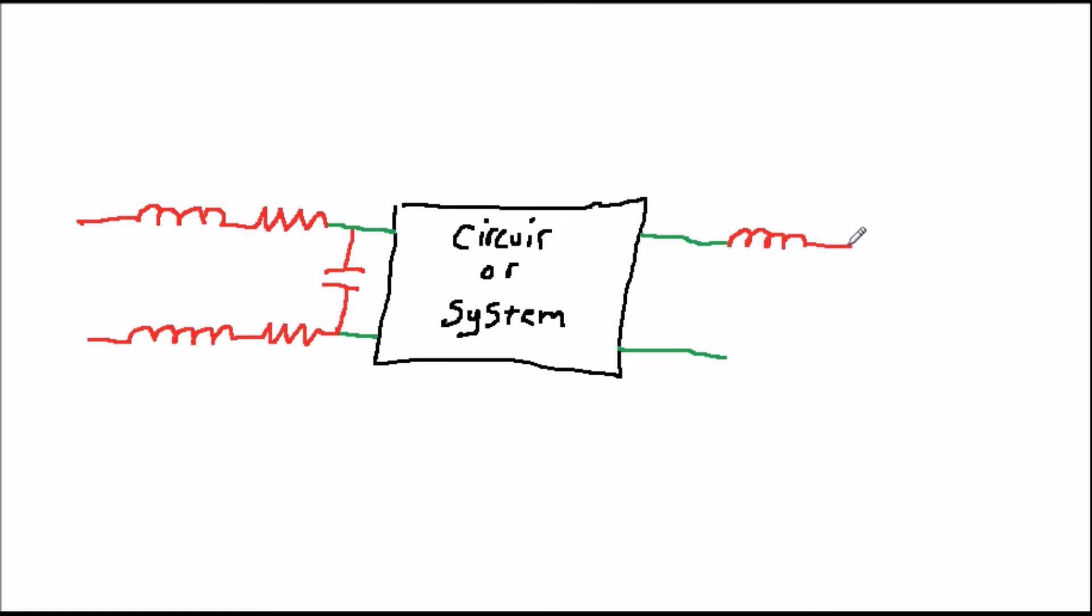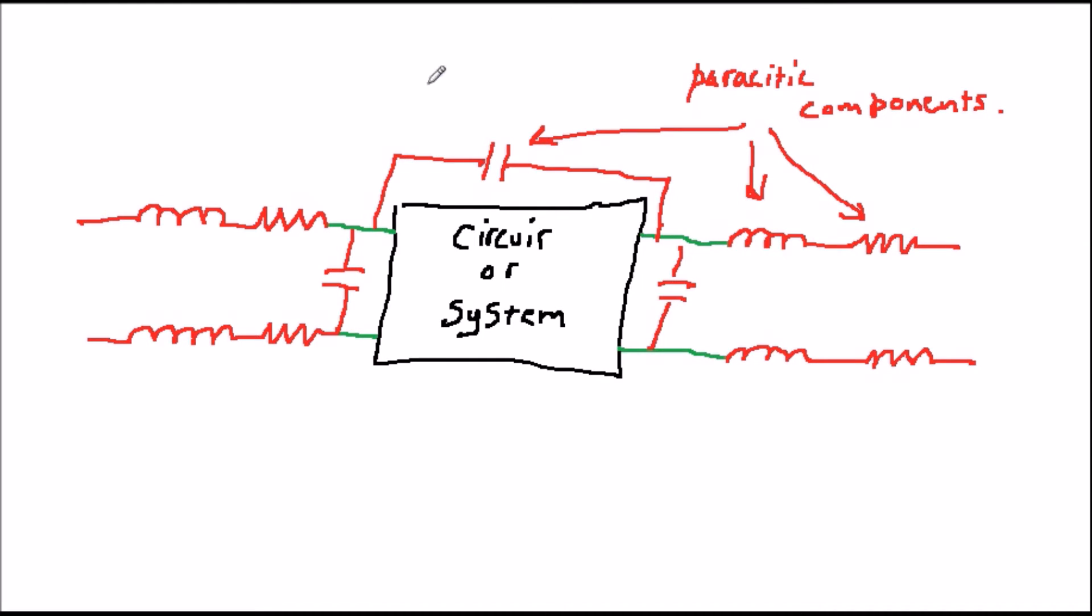We can draw representations of these onto a generalized block diagram, as shown on the screen. Parasitics have two bad effects on the circuit. Firstly, unwanted signals can get into places where they shouldn't be, because they can pass through the parasitic capacitances, or through the magnetic fields of the parasitic conductors.